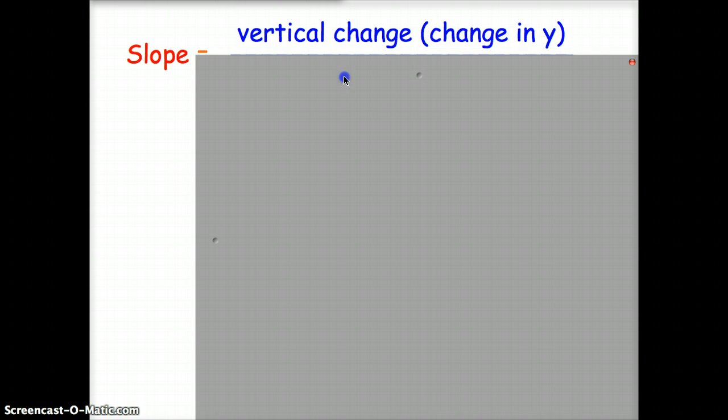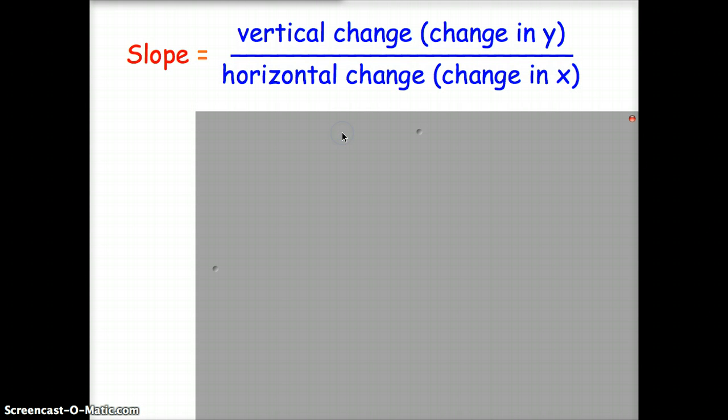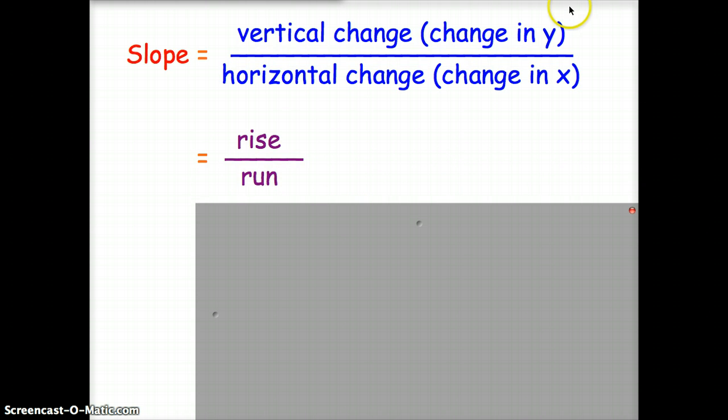So slope is our vertical change, or the change in the y values, over our horizontal change, or the change in the x values. This is also known as the rise over run, because your y values, when you're looking at a coordinate plane, your y values change when you go up and down. Your x values change when you go side to side. So rise over run means that you change your y's over changing your x's.